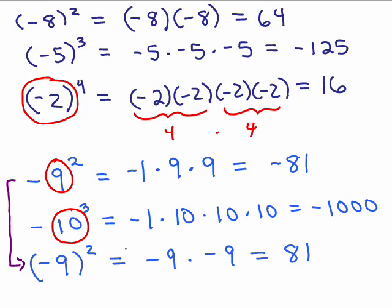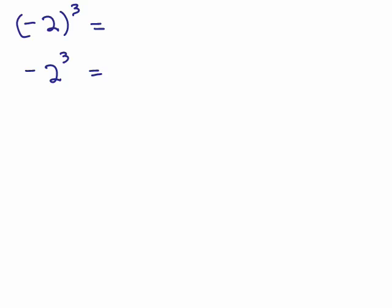Notice, they mean different things and their answers are different. Sometimes, two things that mean something different do come up with the same answer, though. Consider these two. In the first one, the base is negative 2 and I need to have 3 factors of negative 2. So that's negative 2 times negative 2 times negative 2, which is negative 8.